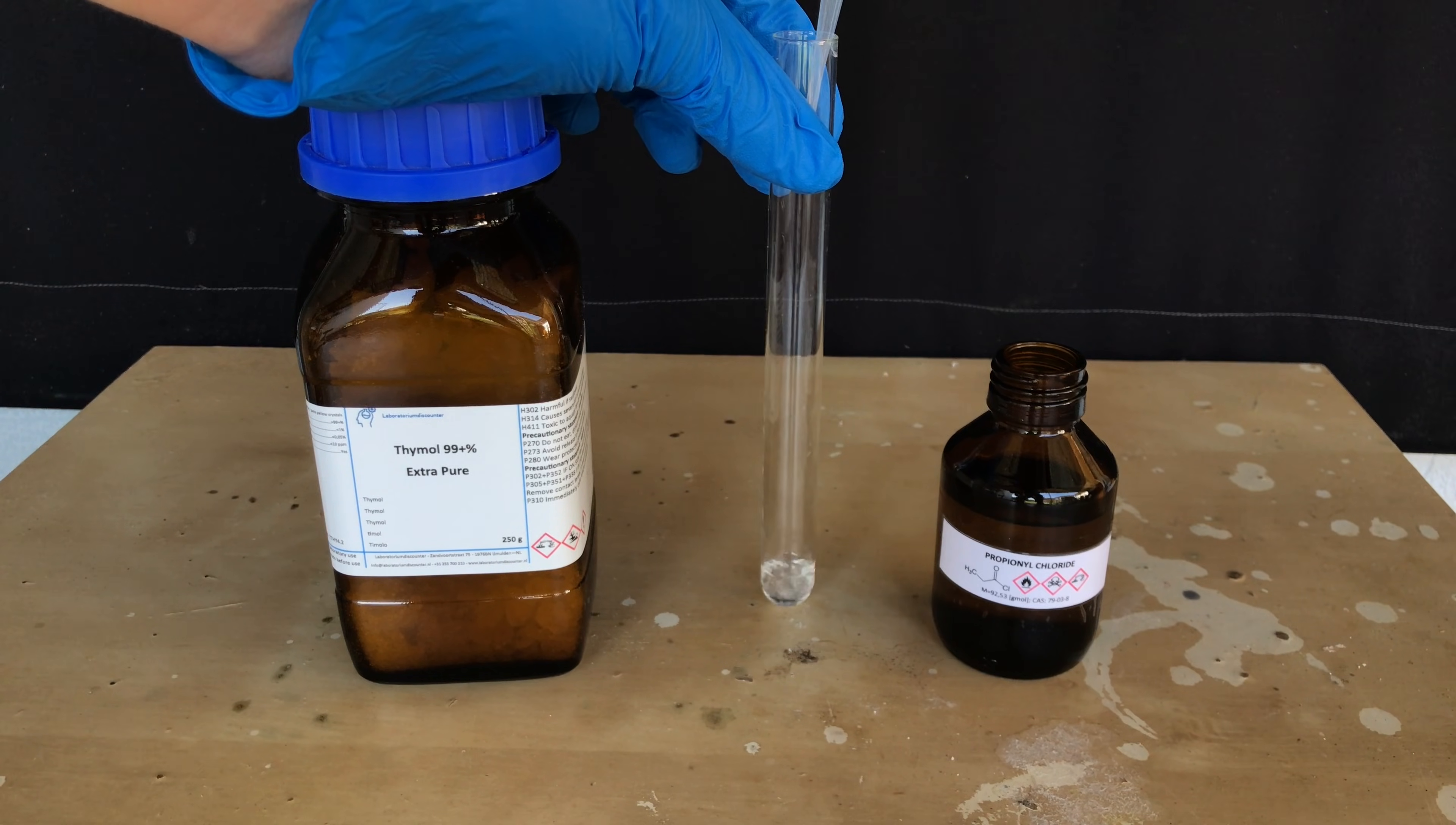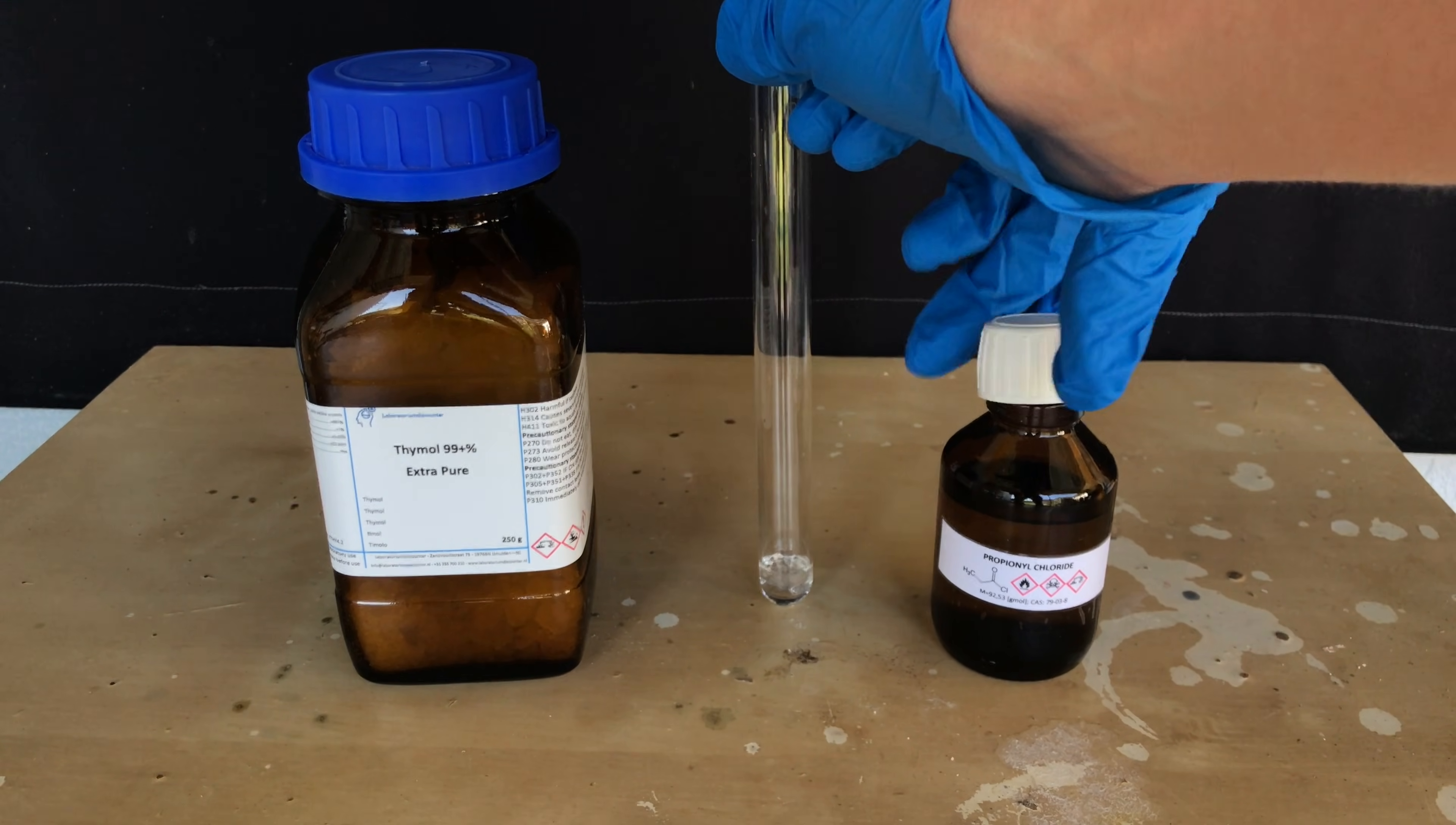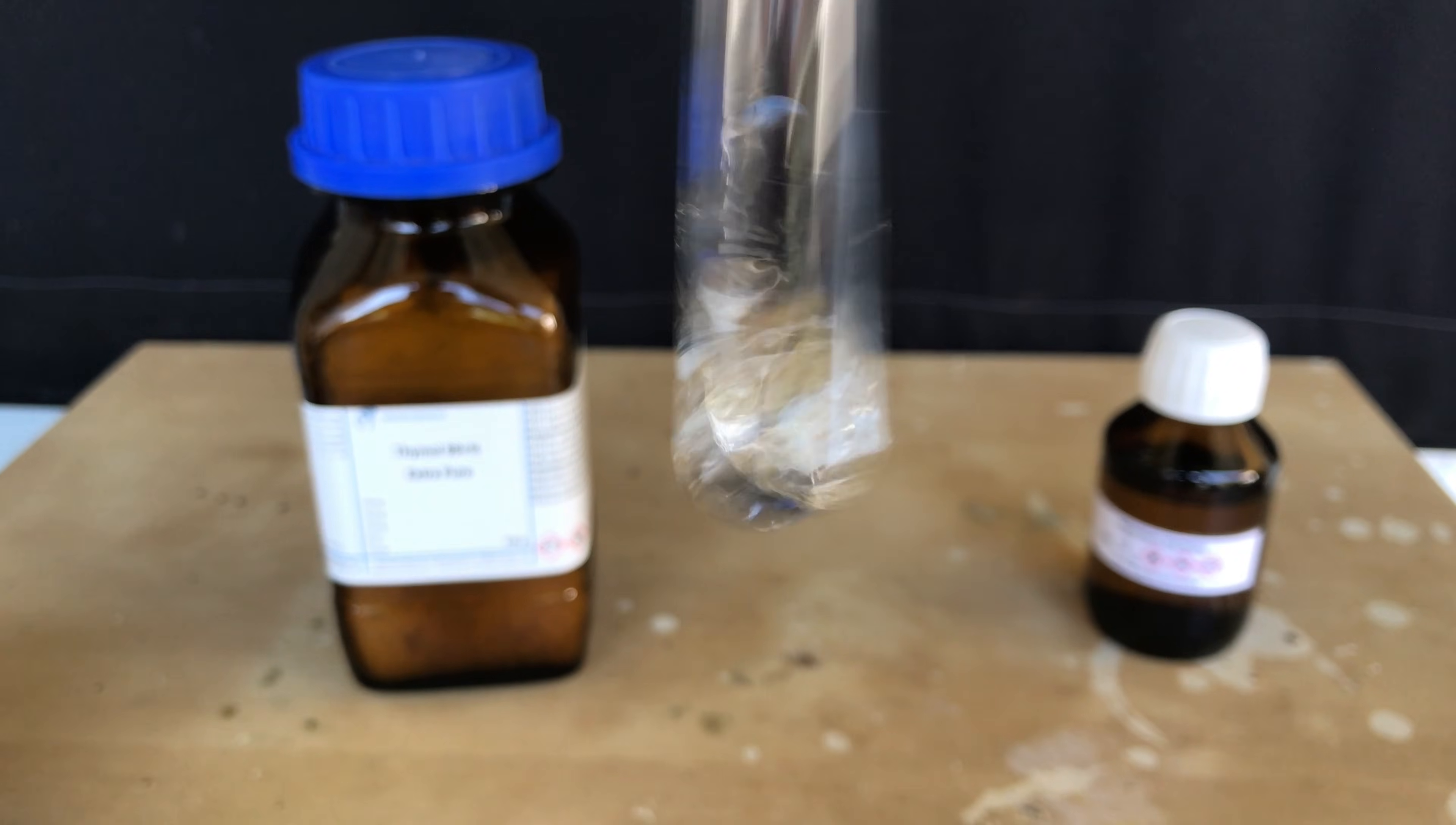Let's talk about reasons why you even want to make propionyl chloride. Occasionally I like to make esters, and you are going to get another video on that soon. If you want to make esters, you can simply mix an acid chloride with your alcohol and you get the ester and hydrogen chloride.